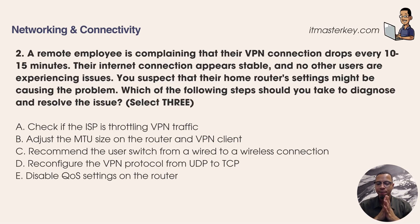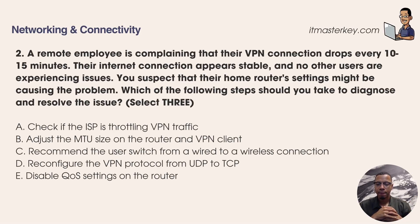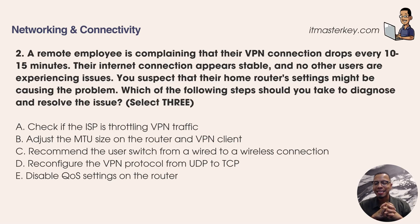A: Check if the ISP is throttling VPN traffic. B: Adjust the MTU size on the router and VPN client. C: Recommend the user switch from a wired to a wireless connection. D: Reconfigure the VPN protocol from UDP to TCP. Or E: Disable QoS settings on the router.